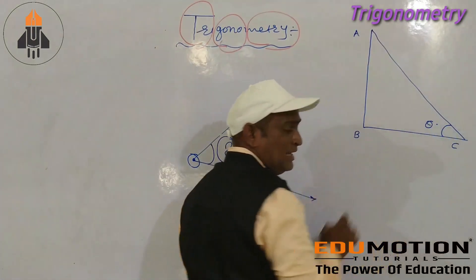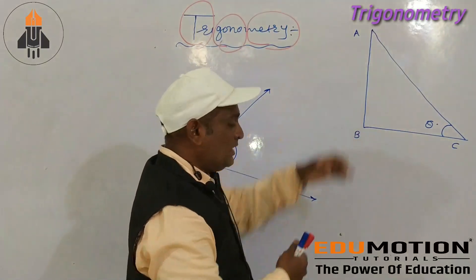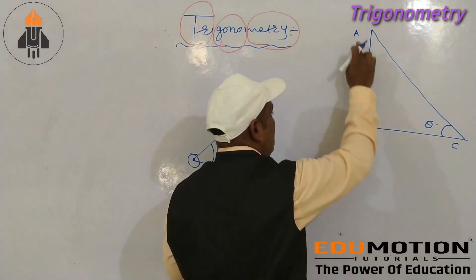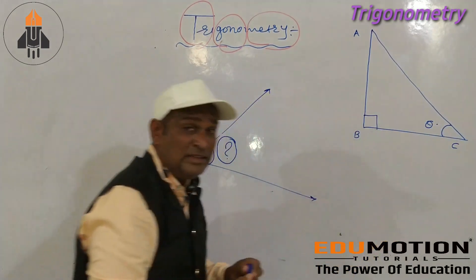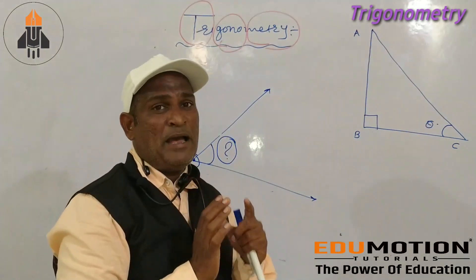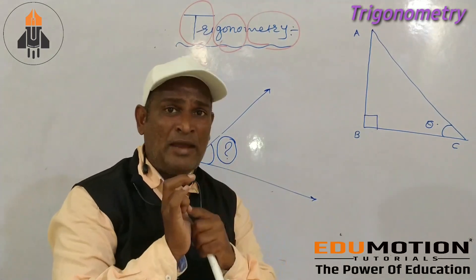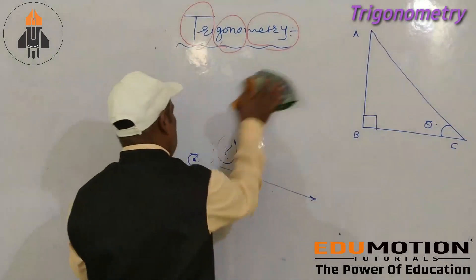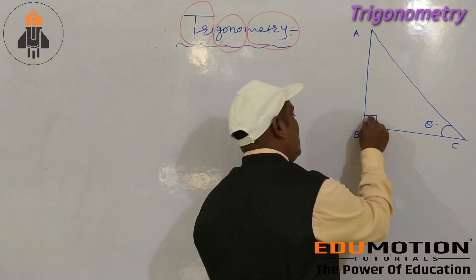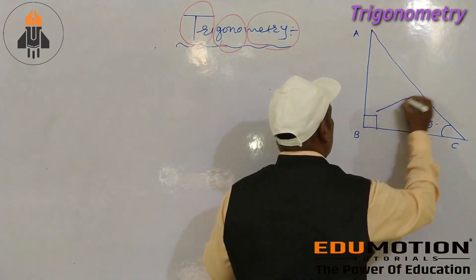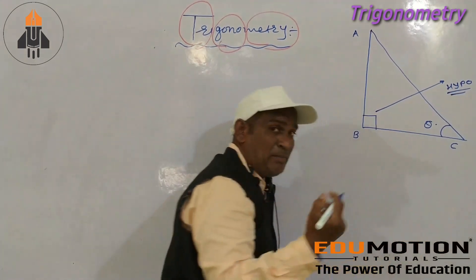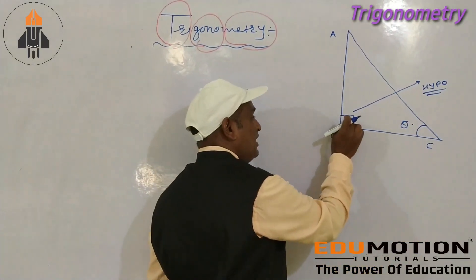The angle points here are considered theta. If you draw a right-angle triangle with vertices A, B, C — this is your right angle and this is your angle theta.